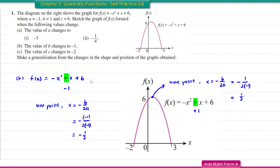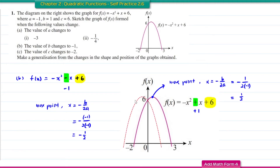For these two functions, both have the same value of c, which is the y-intercept, so both graphs will intersect f(x) at the point 6. This is what the graph for question b looks like.